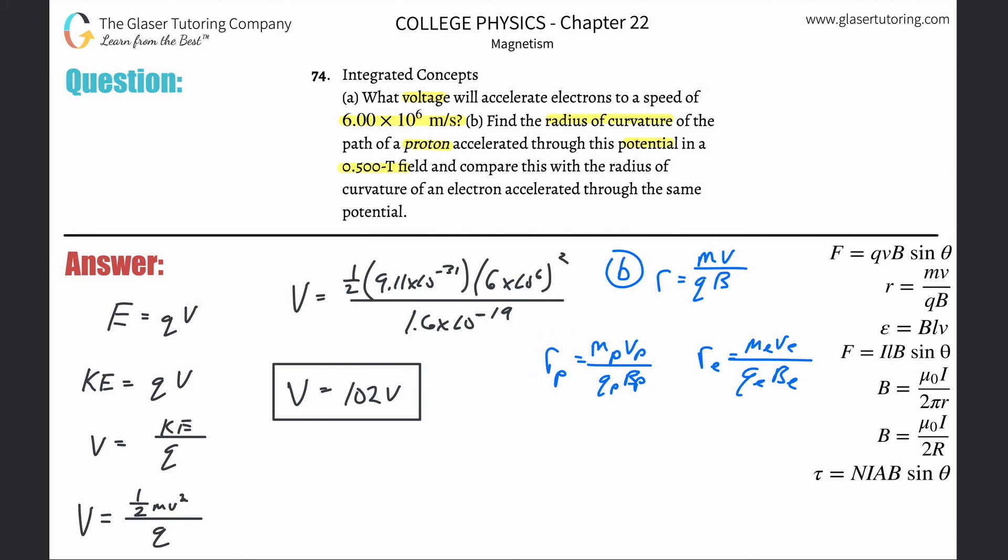Now if I want to compare these two, maybe I'll compare them in terms of a fraction or ratio. So I'm going to take r_p and find out how many times larger or smaller - it depends on if the quantity comes out greater than one or less than one. I'm going to find the radius of curvature of the proton relative to the radius of curvature of the electron.